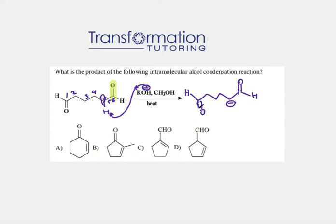Next, I will attack the C=O that is on the other end of the molecule. I'm going to attack this C=O and push my electrons to the oxygen. To draw this correctly, I'll number the atoms that are attaching to each other: one, two, three, four, and five — so I'm making a five-membered ring. I can already tell that answer choice A cannot be right because I'm making a five-carbon ring.